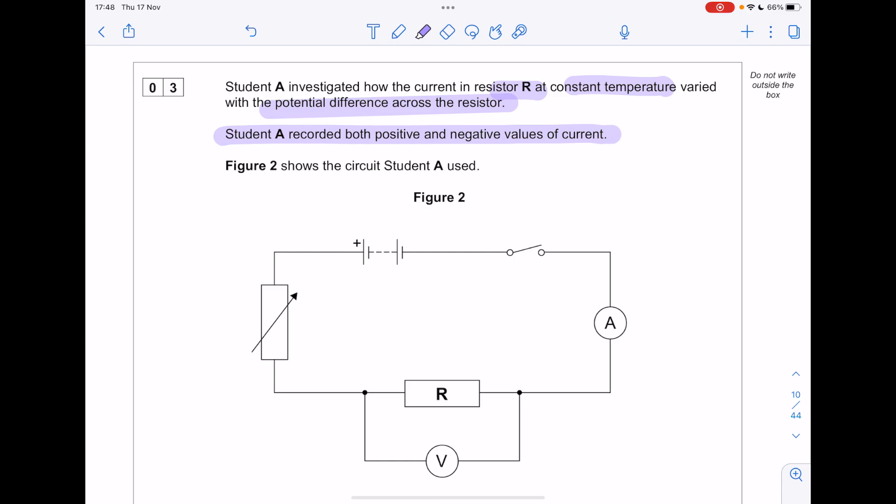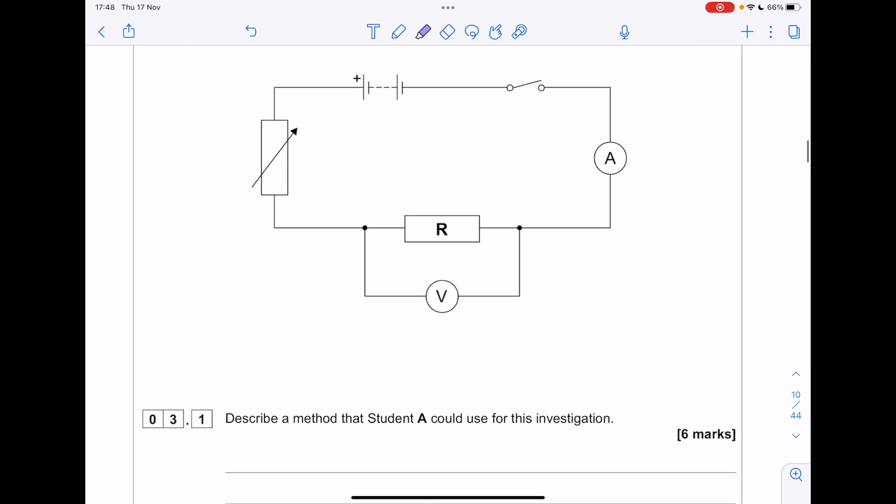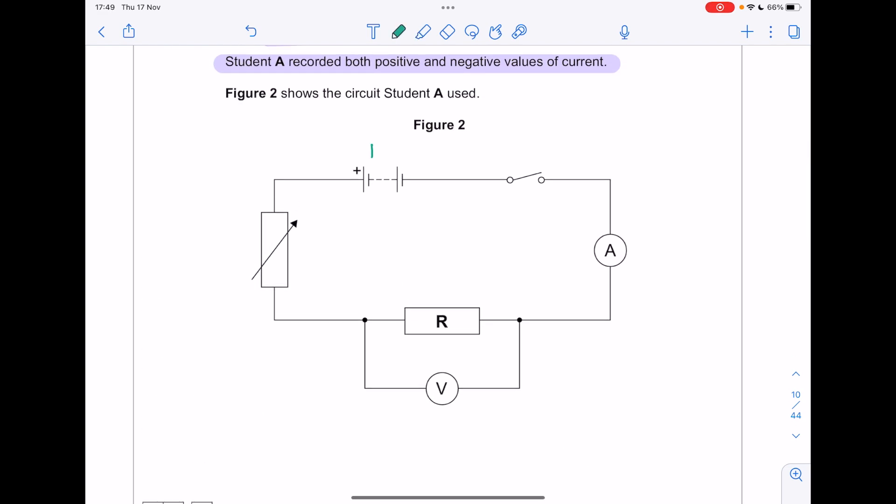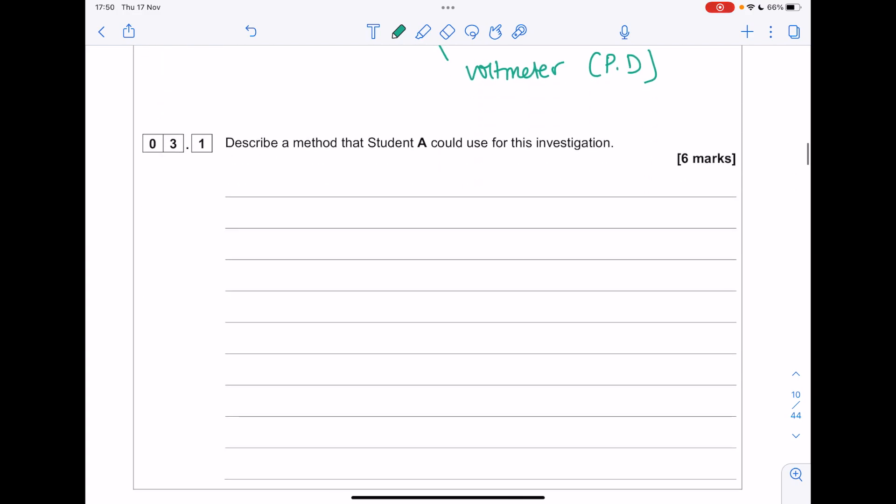Student A investigated how the current in resistor R at constant temperature varied with the potential difference. Student A recorded both positive and negative values. Figure 2 shows the circuit used. Describe a method. Let's label everything first. Here's your battery, variable resistor, switch, ammeter which measures current, resistor, and voltmeter which measures potential difference. We're measuring the current using the ammeter and potential difference using the voltmeter.